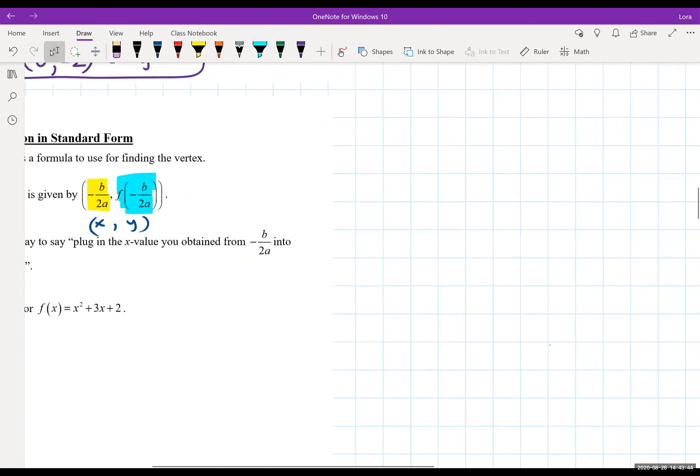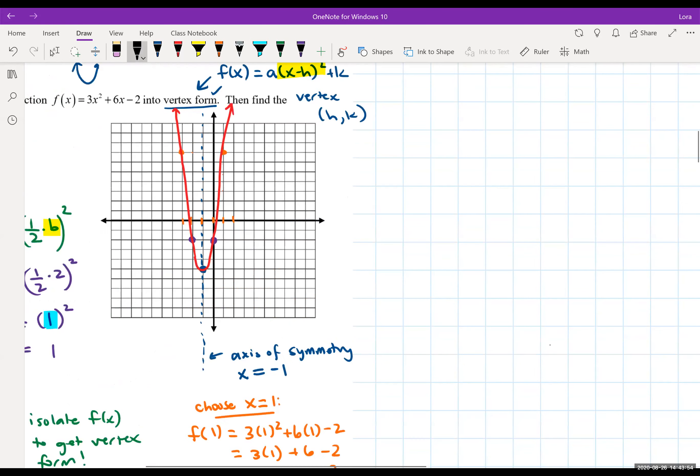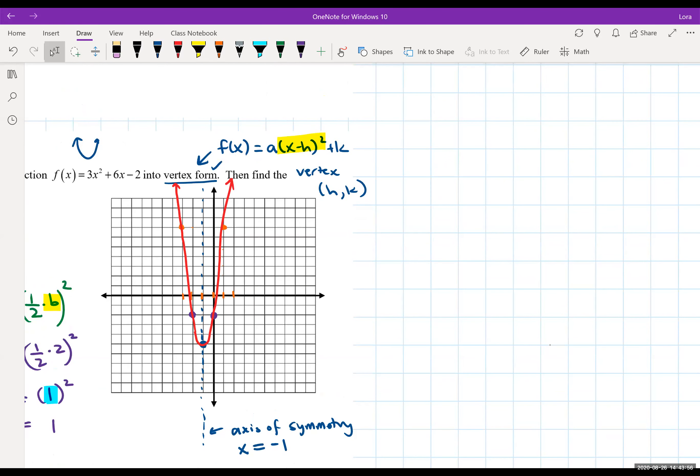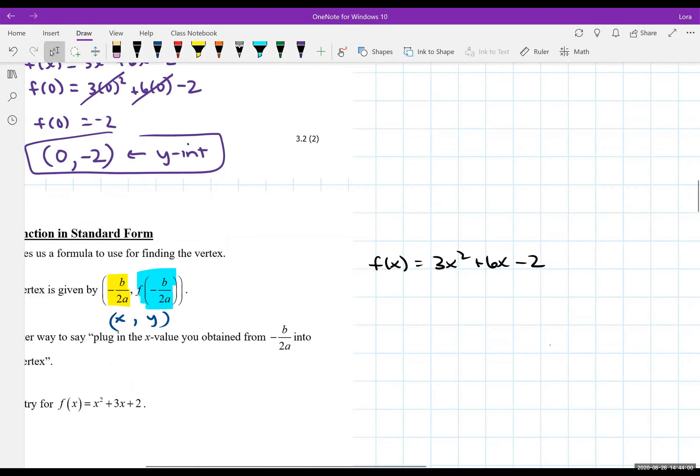So I'm going to take this off to the side. f of x equals 3x squared plus 6x minus 2. I'm going to remind myself make sure I copied it down right because that's usually the biggest battle. 3x squared plus 6x minus 2.